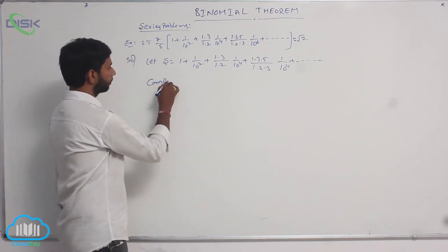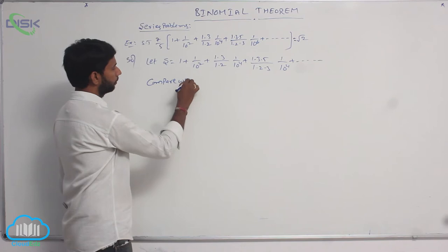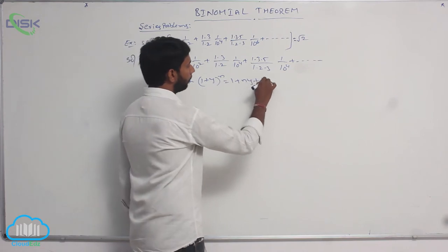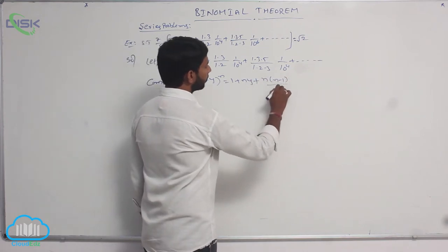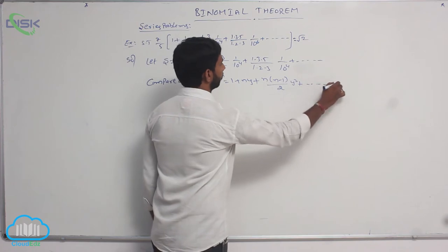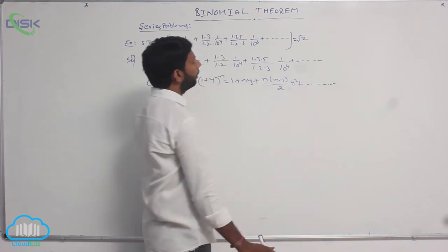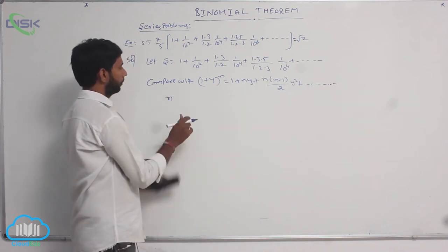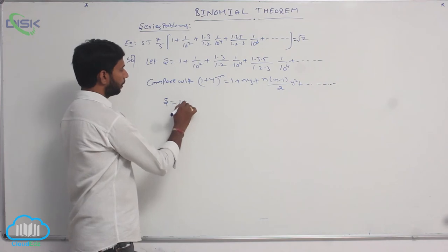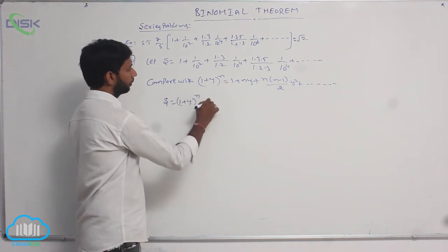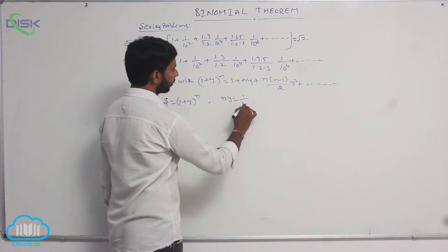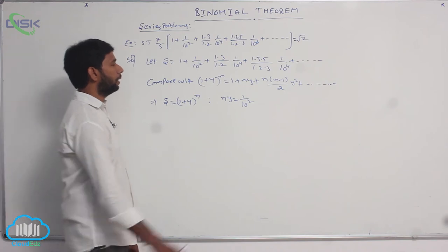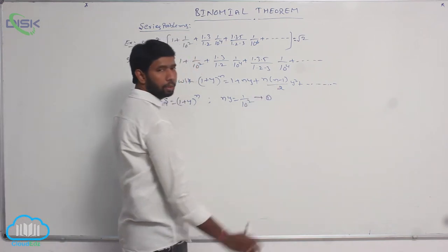Compare S with the binomial expansion: (1+y)ⁿ = 1 + ny + n(n-1)/2 · y² + and so on. Here ny is equal to 1/10², which is taken as condition number 1.